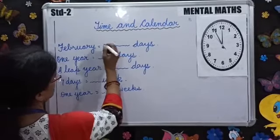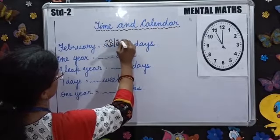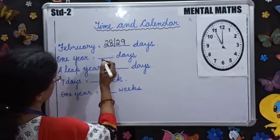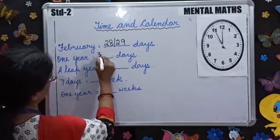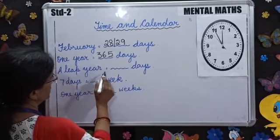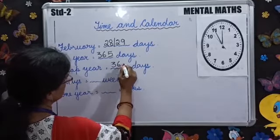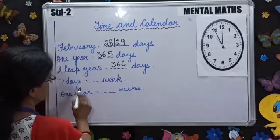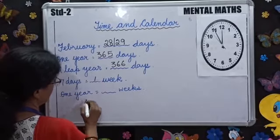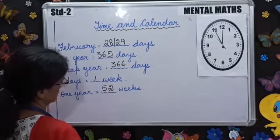February has 28 or 29 days. 1 year is equal to 365 days. A leap year is equal to 366 days. 7 days make 1 week. And 1 year is equal to 52 weeks.